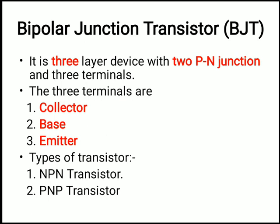It is a three-layer device with two PN junctions. 'Bi' means two, so it will have two junctions. In a diode there was only one PN junction, so we had only two electrodes — anode and cathode. But here, since there are two PN junctions, we will have three terminals: the first is the collector, second is the base, and third is the emitter.